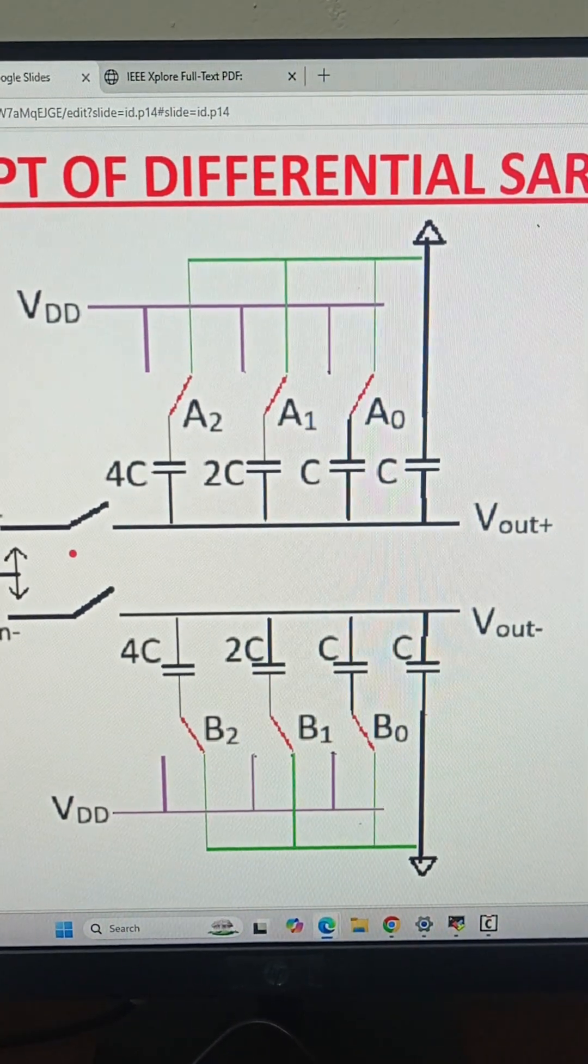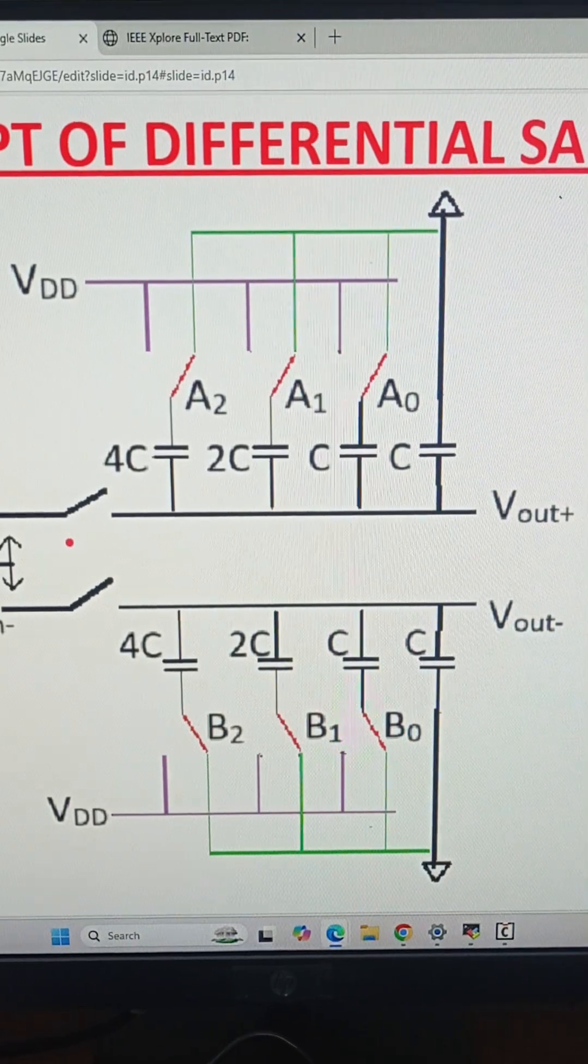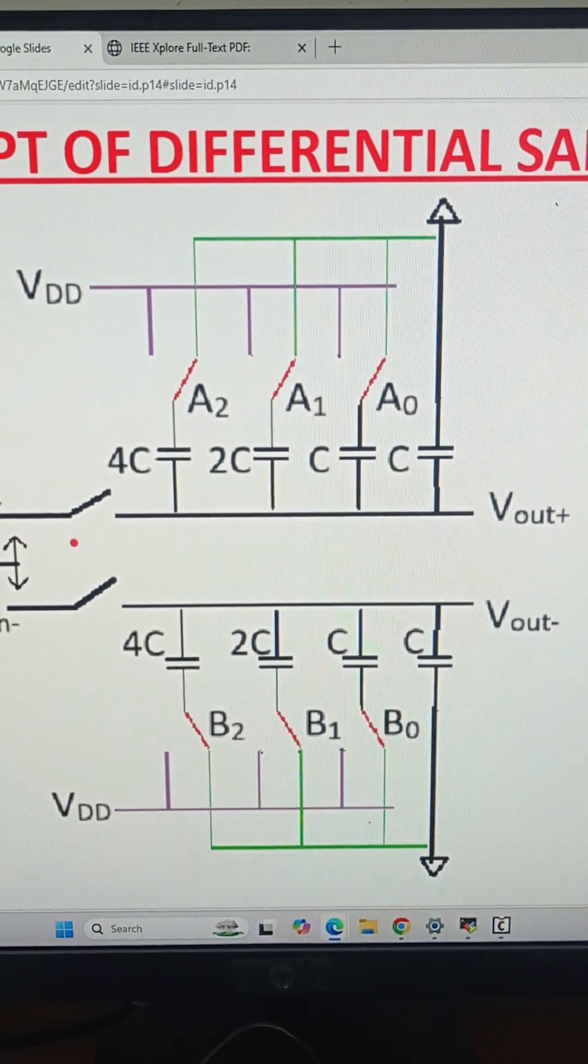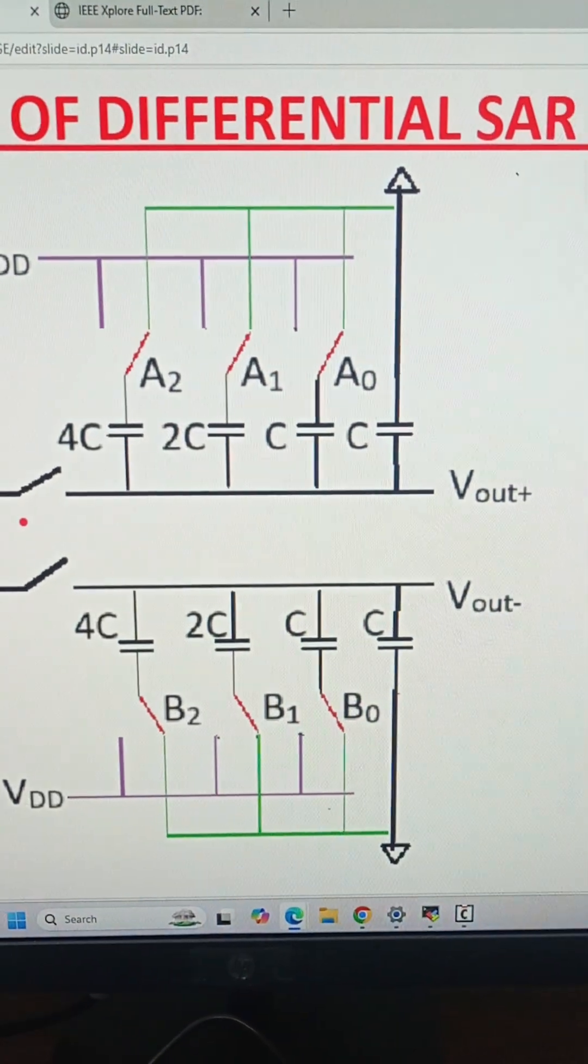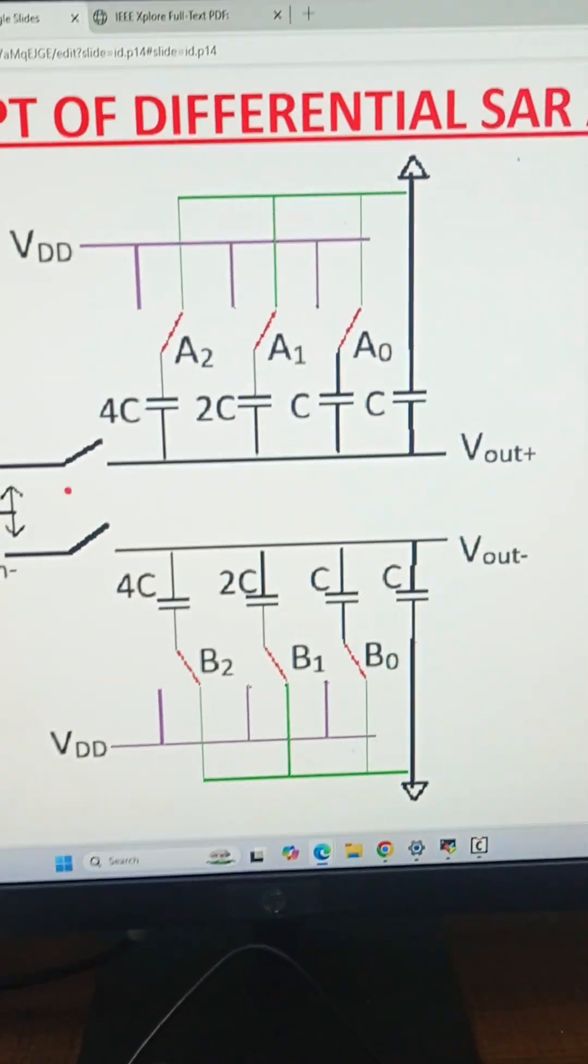At the moment of sampling, the six switches that are controlled by signals A2, A1, A0, B2, B1, B0 are all connected to ground. The output voltages V_out+ and V_out- will be directly connected to the comparator.